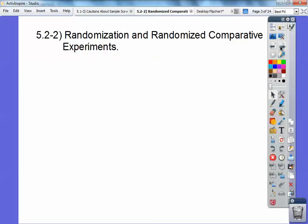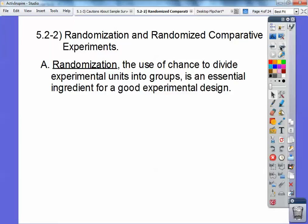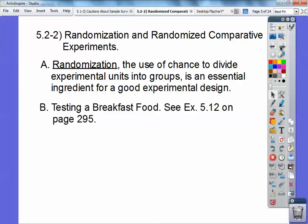So here it is, randomization and randomized comparative experiments. Randomization is the use of chance to divide experimental units into groups. It's an essential ingredient for a good experimental design. So let's try some of this. Section B, testing a breakfast food. And this is example 5.12 on page 295.